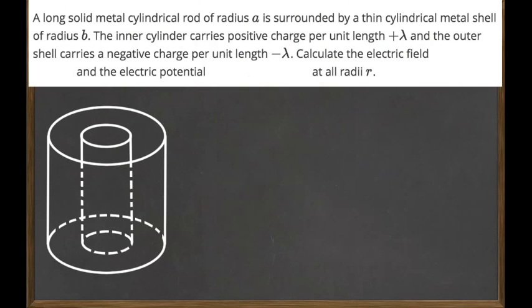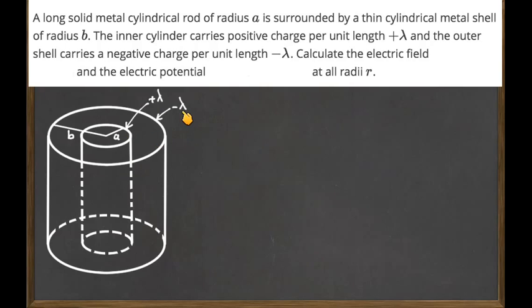Let's picture the problem. We have two concentric cylinders. The inner cylinder is a metal rod with radius a, and the outer cylinder is a shell with radius b. Between these two cylinders we have an empty space. The inner cylinder has a charge density plus lambda and the outer has minus lambda — they have the same charge per unit length.